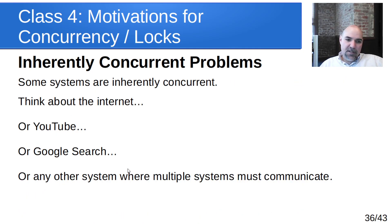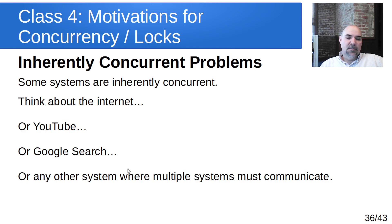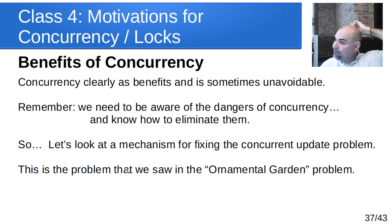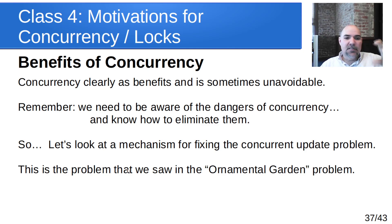Some problems are inherently concurrent — anything on the internet like YouTube, where many people are watching and uploading videos simultaneously, is an inherently concurrent multi-user system. Any system where multiple subsystems communicate, like the Mars Rover sending data back to a system on Earth, is inherently concurrent. You cannot have a purely sequential system with that kind of communication. There are clearly benefits to concurrency, and sometimes you can't get away from it. As a reminder, we need to be aware of the dangers and know how to eliminate them.